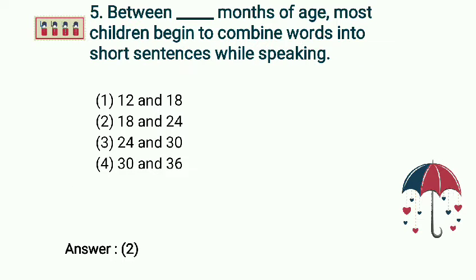Question 5: Between dash months of age, most children begin to combine words into short sentences while speaking. Options: 12 and 18, 18 and 24, 24 and 30, 30 and 36. Answer: 18 and 24 months of age.